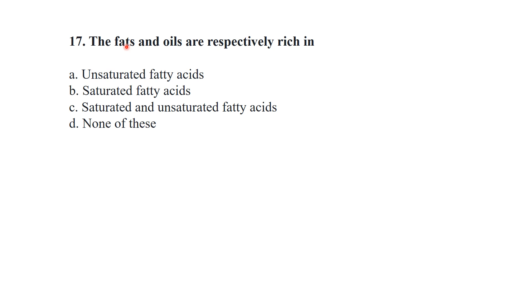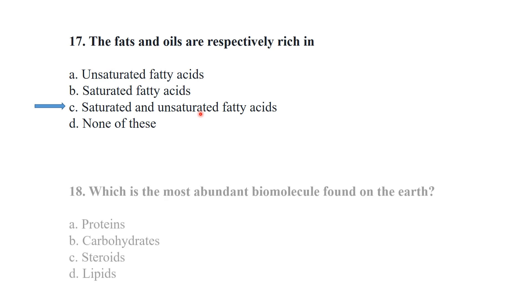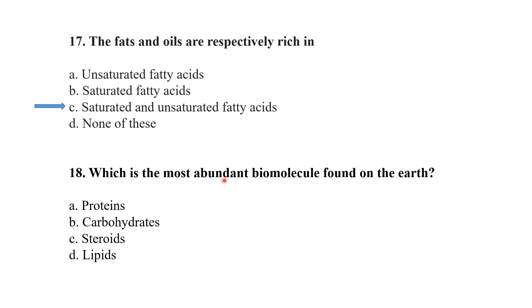Fats and oils differ in their fatty acid composition: fats are rich in saturated fatty acids while oils are rich in unsaturated fatty acids. Which is the most abundant biomolecule found on Earth? Among biomolecules, carbohydrates are present in the maximum number.